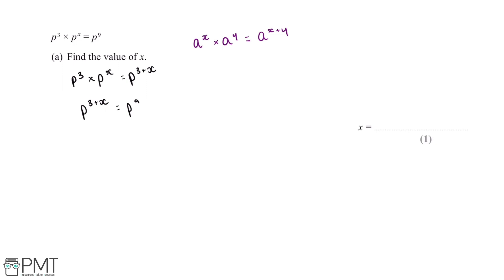We can simplify this down to 3 plus x is equal to 9, and then if we minus 3 from both sides we get an answer of x equals 6.